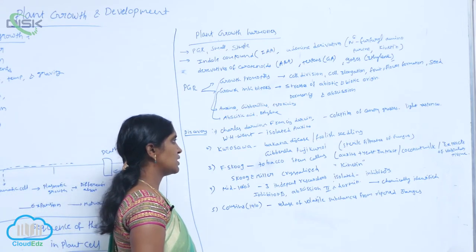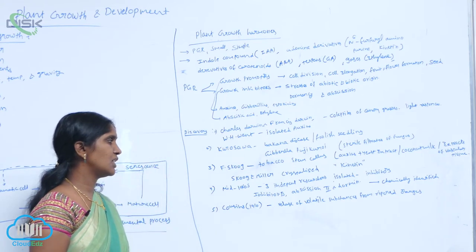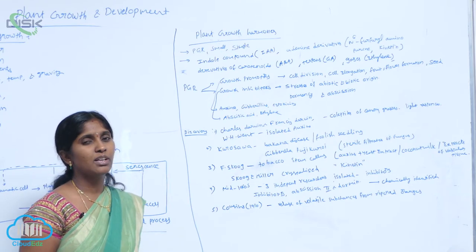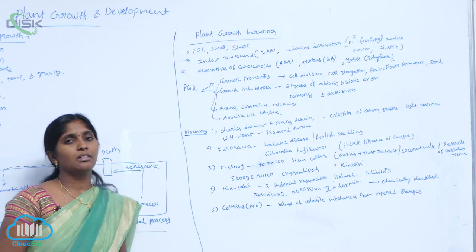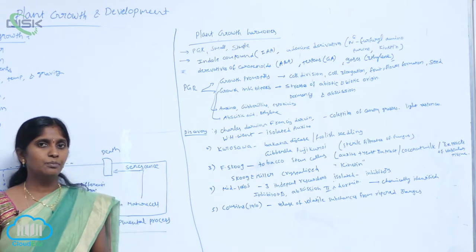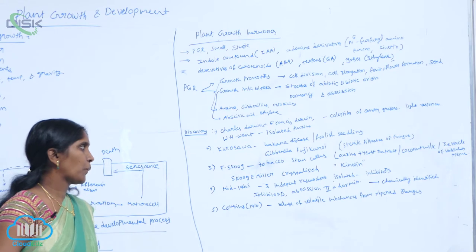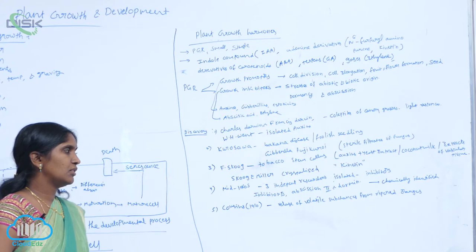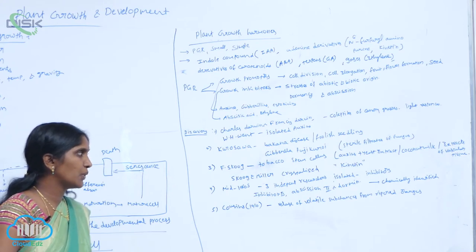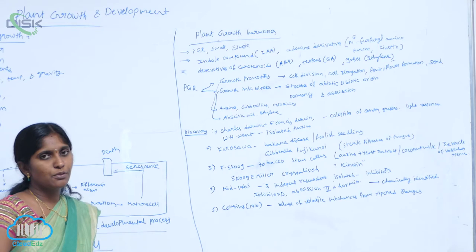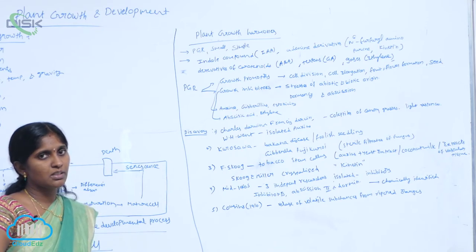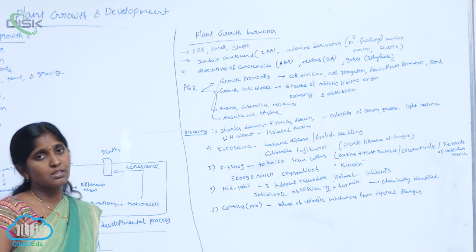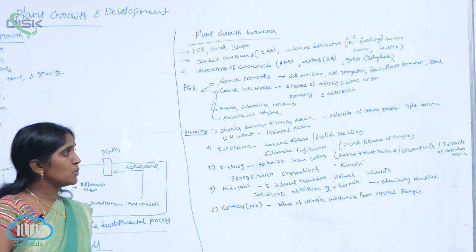Next, the scientist Kurosawa studied the foolish seedling disease, also called Bakanae disease, that caused disease in rice seedlings. The causative pathogen is Gibberella fujikuroi. The asexual stage of Fusarium moniliforme.